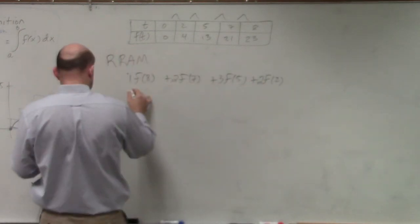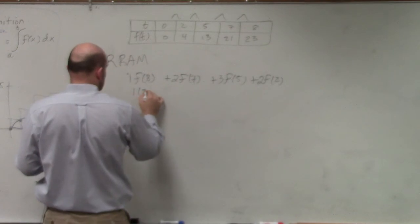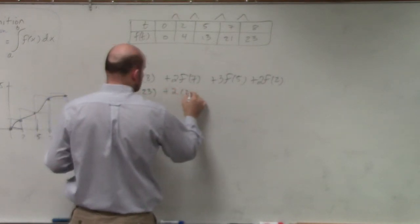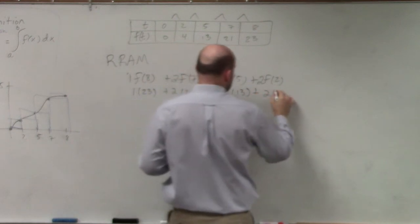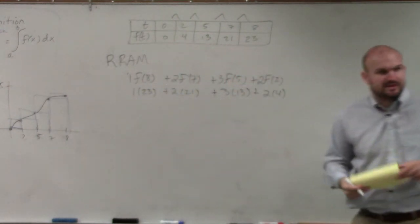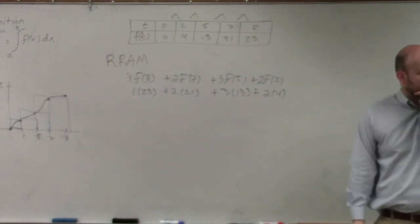So now we just do, let's see. This is going to be 1 times 23 plus 2 times 21 plus 3 times 13 plus 2 times 4. Does everybody see where I'm getting those values as well as how I got my widths?